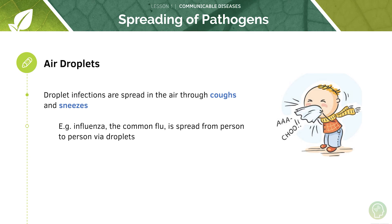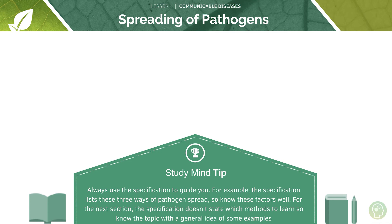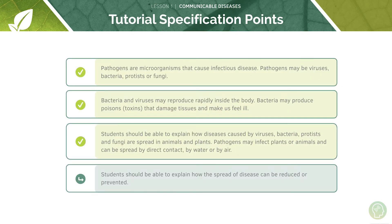Aerosol or droplet infection is spread through the air when someone coughs or sneezes. A common example of this is influenza — the common flu — which is spread from person to person via droplet infection. Remember to always use the specification to guide you, as the specification lists these three methods of pathogen spread. The specification is quite vague on the next section, so you could do wider reading on ways to reduce or prevent the spread of disease.